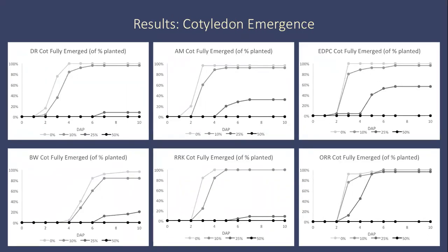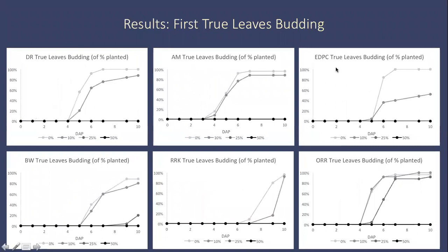For cotyledon emergence, in five of the six cultivars — with the exception of Outredgeous red romaine — there was a large difference between the 10% and the 25% concentration of regolith. And again, for the first true leaves budding, for five of the six cultivars, with the exception of Outredgeous red romaine, there was a large difference between the 25% and the 10% concentrations of regolith.